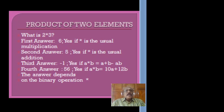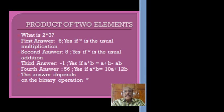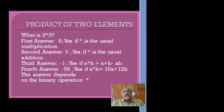What is 2 ★ 3? The answer is 6 — correct if ★ is the usual multiplication. The second answer is 5, which is true if ★ is usual addition. The third answer is −1, which is correct if a ★ b is defined as a + b − ab. The fourth answer is 56, correct if a ★ b is defined by 10a + 12b. So the answer for 2 ★ 3 depends upon the binary operation ★, and in this way we define the product of two elements.